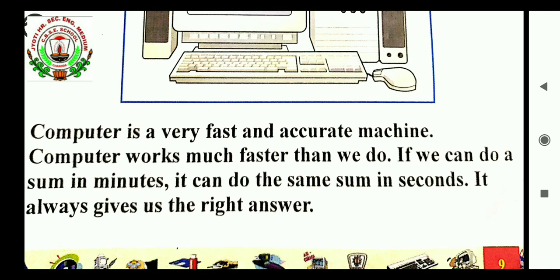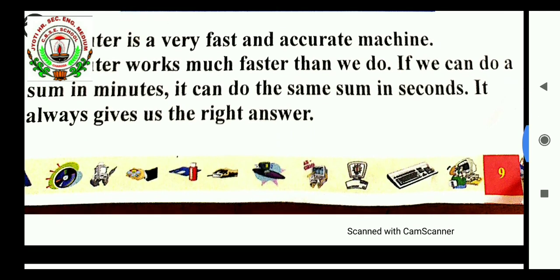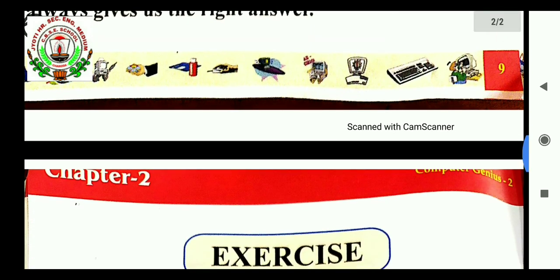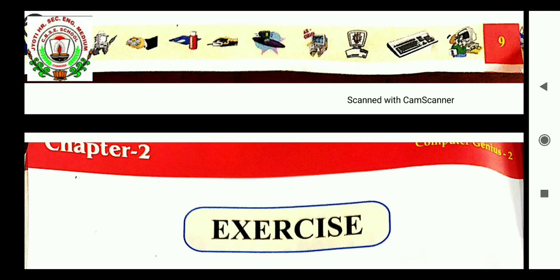Accuracy is more than human being. So, do you understand? Basically, with the help of computer, in short, we can say that it save our time because it is faster than us and energy. And also, it gives more accurate answer. Everyone knows, everyone understood what is computer? Now, come to exercise.